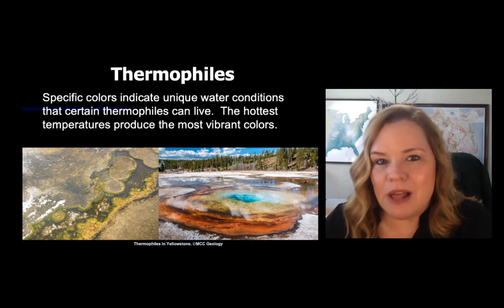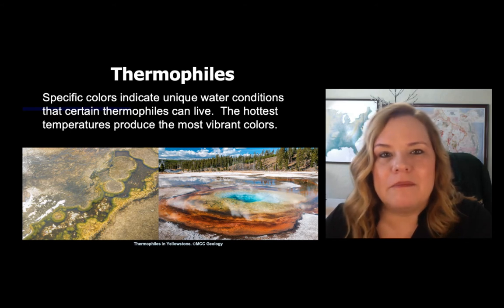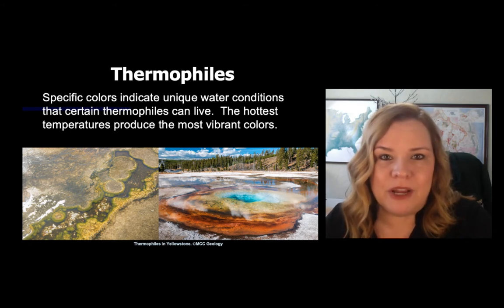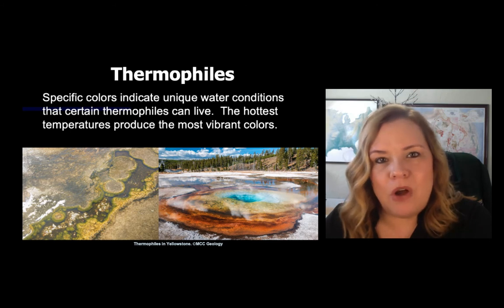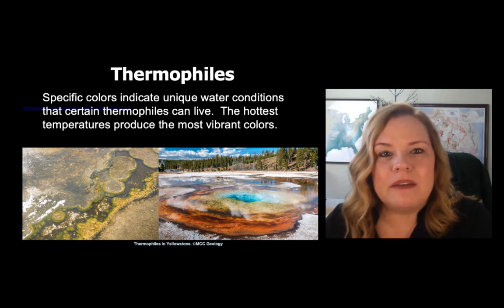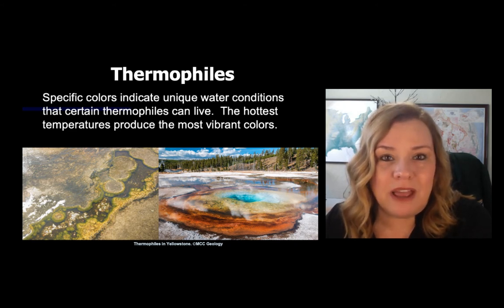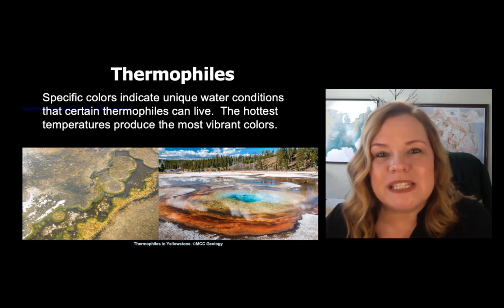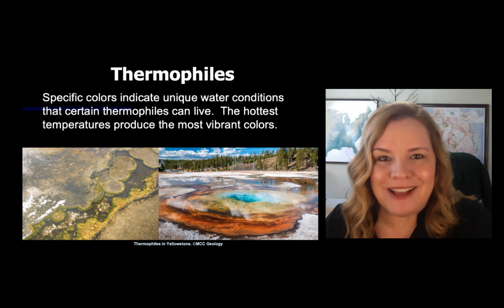You can actually see this at the northernmost part of Yellowstone — Mammoth Hot Springs. Where hot springs may not flow all the time, you can see the colors of thermophiles when water is flowing. When they don't have water flowing, it just looks like plain white travertine.